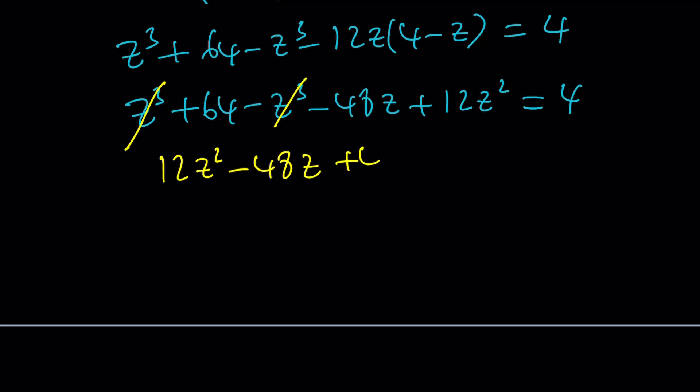12z squared minus 48z plus 64. And I'm going to subtract the 4, so that's going to become a 60. Yay! I got a common factor. Awesome. And that's 12, which is the leading coefficient, which is super nice. Divide everything by 12, z squared minus 4z plus 5 equals 0.